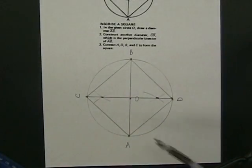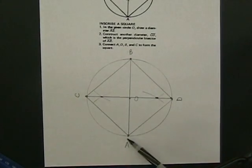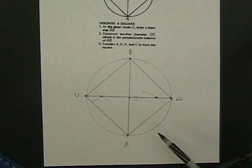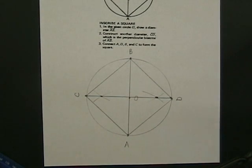So I've constructed square BDAC by inscribing that square inside of the circle.